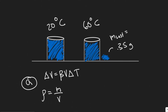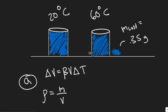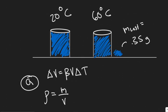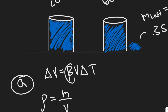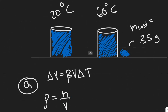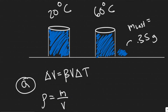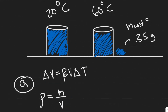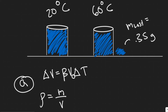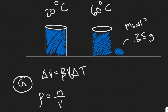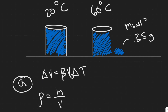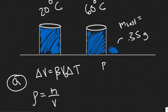What we're trying to find is the coefficient of volume expansion of the container. That's this value here, beta, which appears in the formula where the change in volume equals beta multiplied by the initial volume times the change in temperature. If we can figure out the change in volume and all the other values, we'll be able to solve for beta of the container.